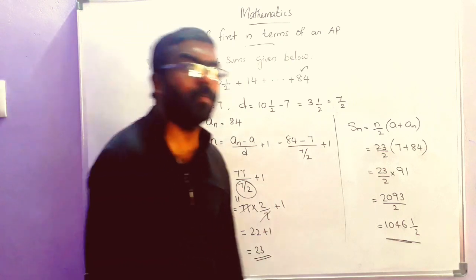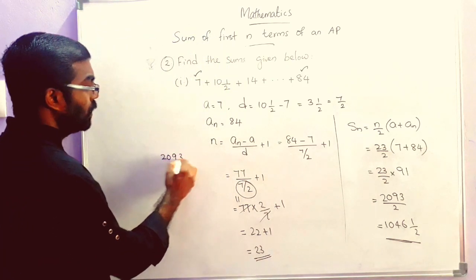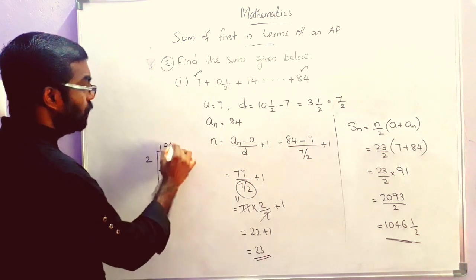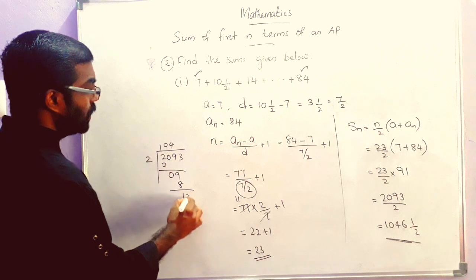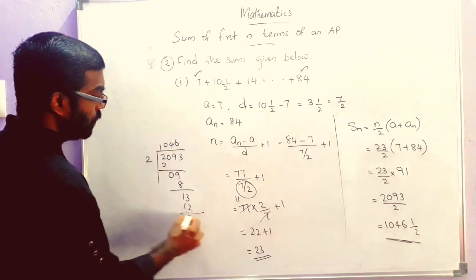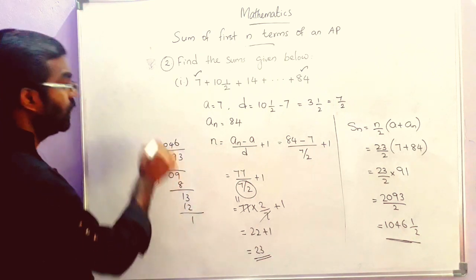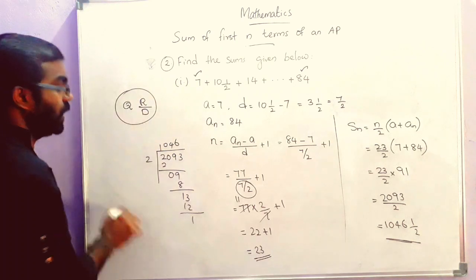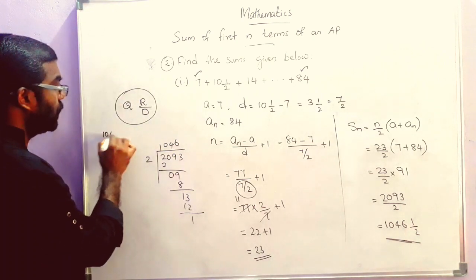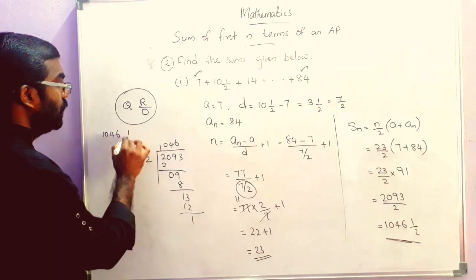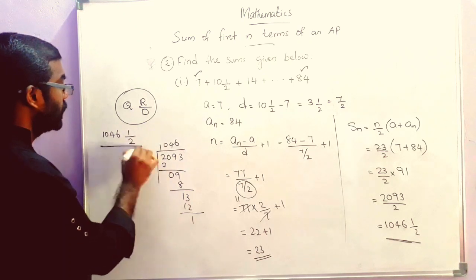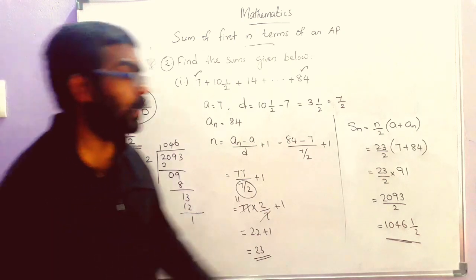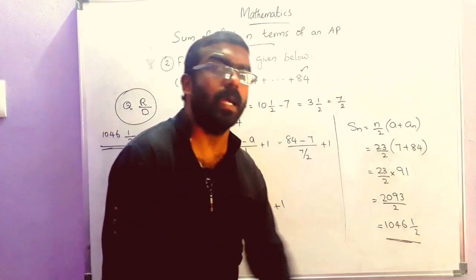So 1046 and 1 by 2. In mixed number form, we write the quotient first, then remainder by divisor. Here 1046 is the quotient, remainder is 1, divisor is 2. So the sum is 1046 and one half.